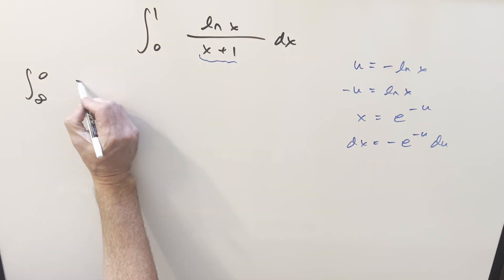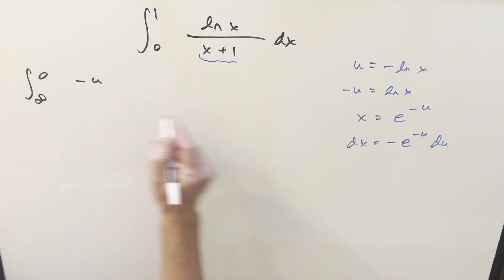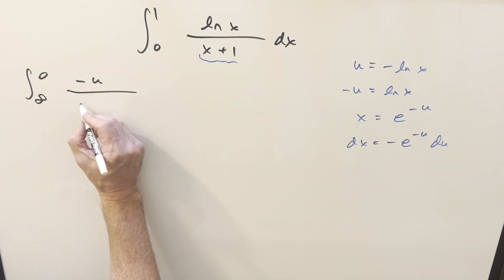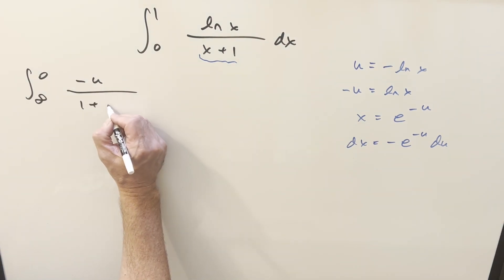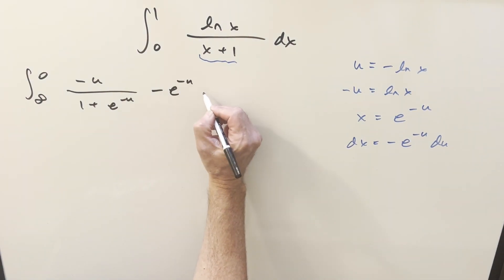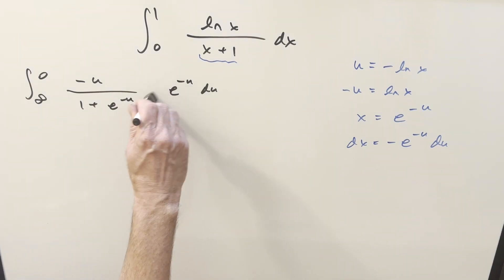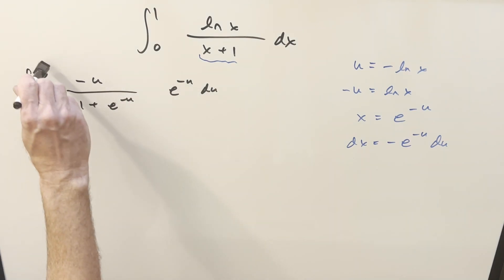Then ln x is just minus u, x is going to be this stuff, so I'm going to change the order, write it like one plus e minus u, then dx we're going to have this minus e minus u du. Let's use this minus sign right here to flip the bounds just so that we can get the infinity up top here.